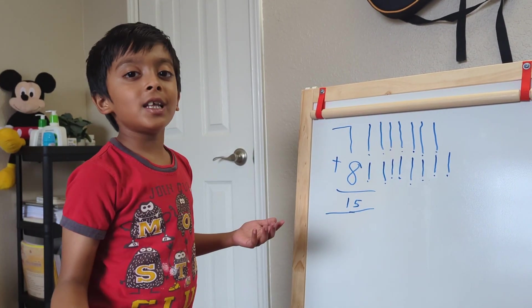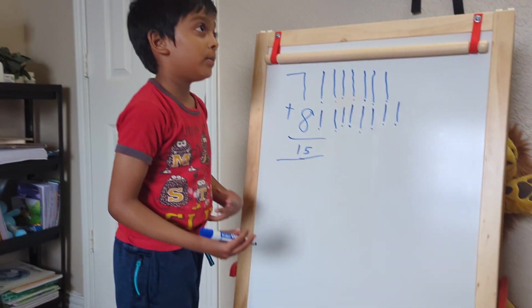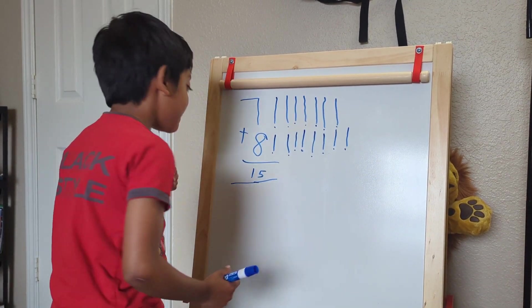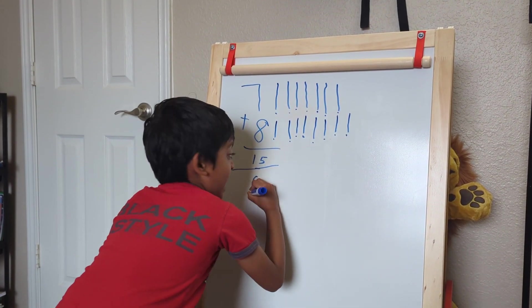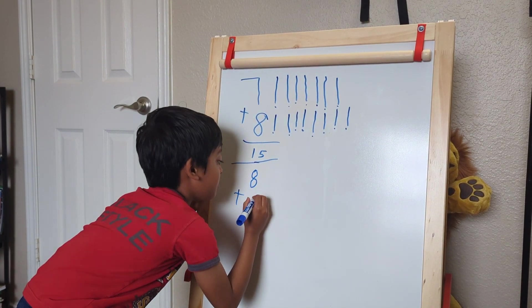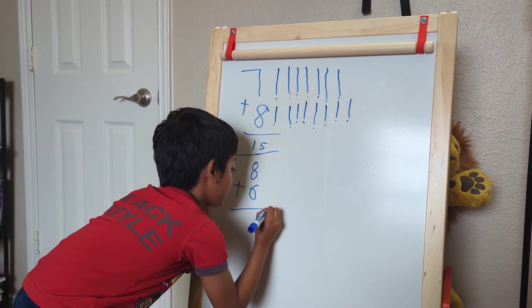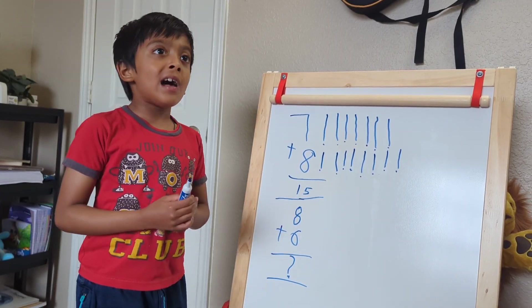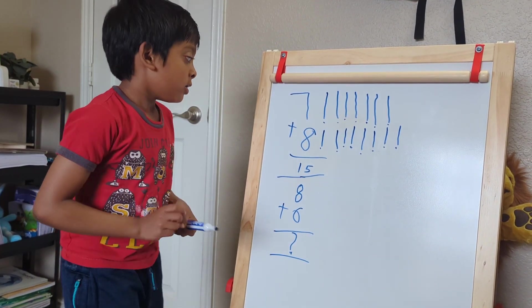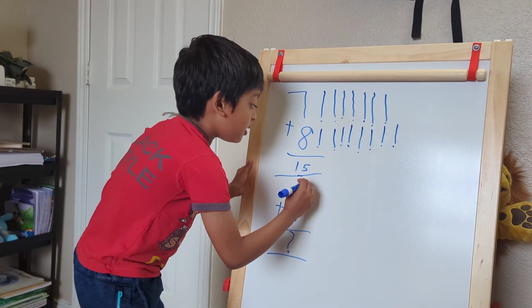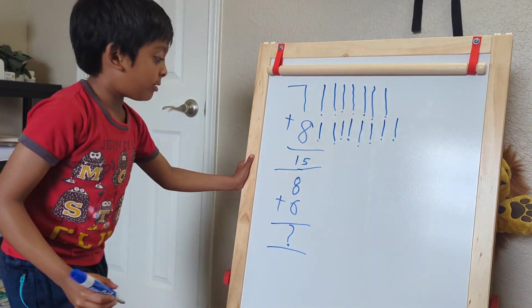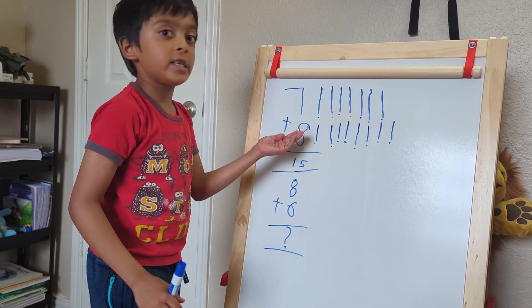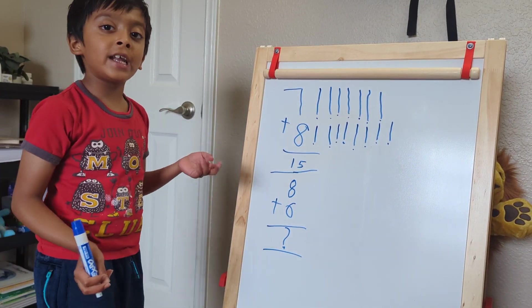Now let's do another addition. Let's do 8 plus 6. Now let's make another thing. So we will not write the lines in the first number now. We will write the lines in the second number. So we already had 8 here, right? So we know that it is 8.